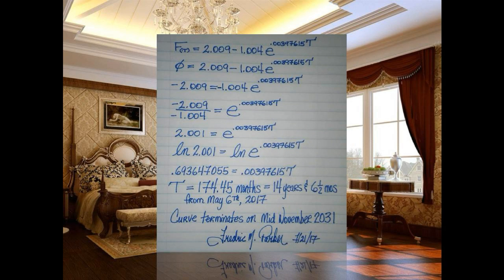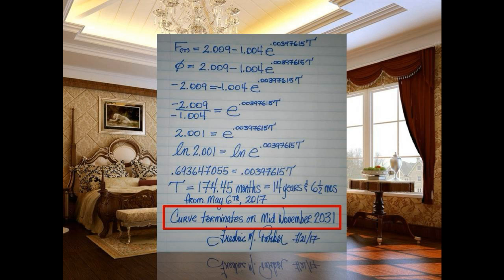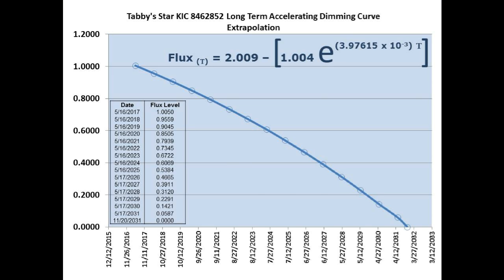This is the calculation of the estimated date that the long-term accelerated dimming curve will terminate. Setting the normalized flux level to zero, we get a total of 174.45 months from our starting date of May 6th of this year — that equates to 14 years and 6.5 months, sometime in mid-November of 2031. That's the date we project will be the termination point. This is a graphical and tabular representation of that curve over those 14.6 years.